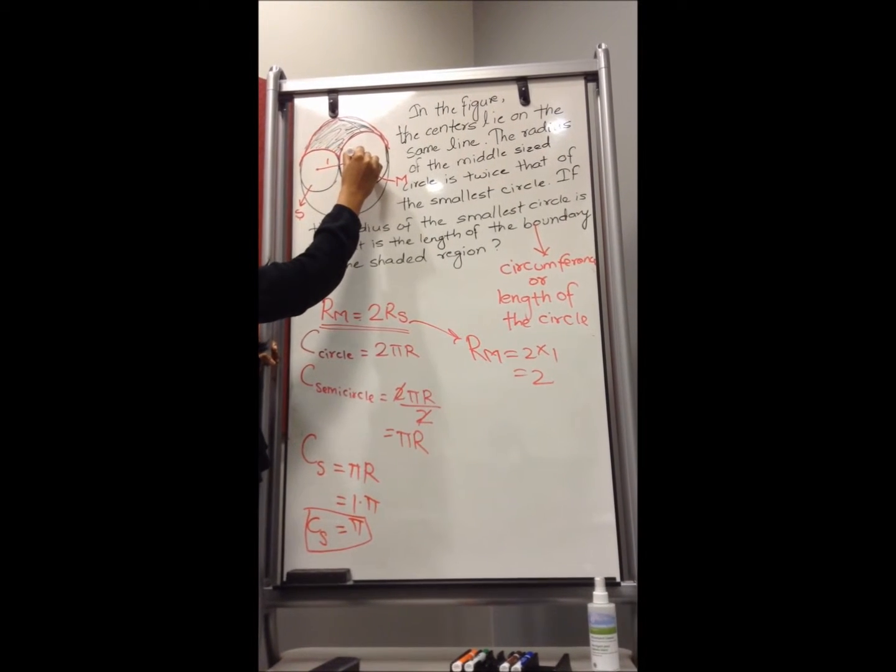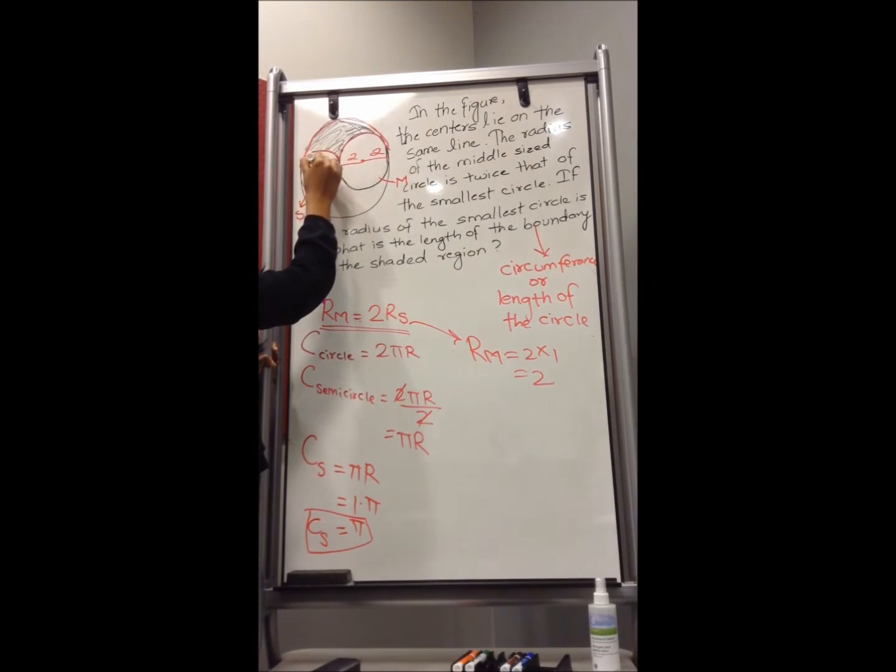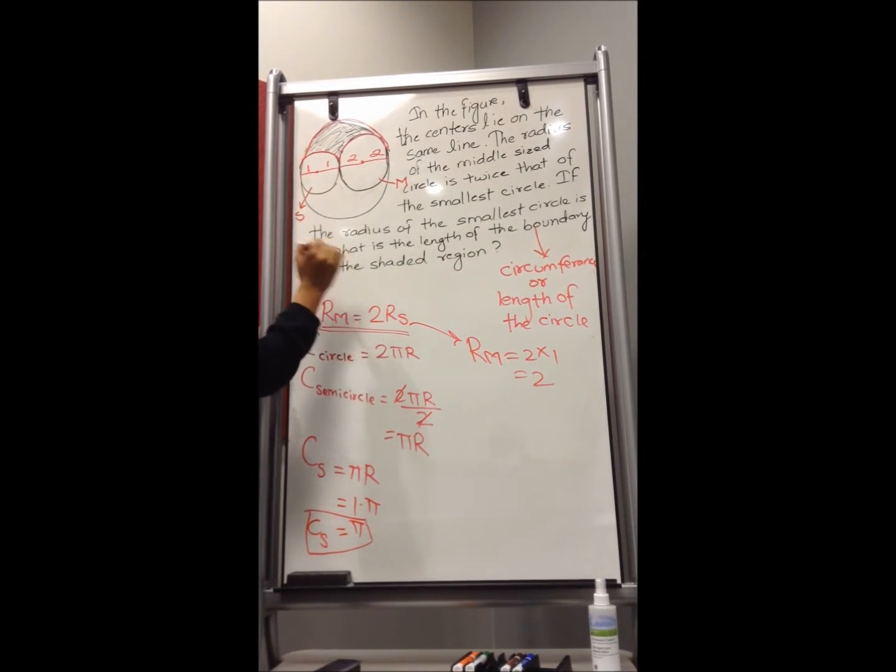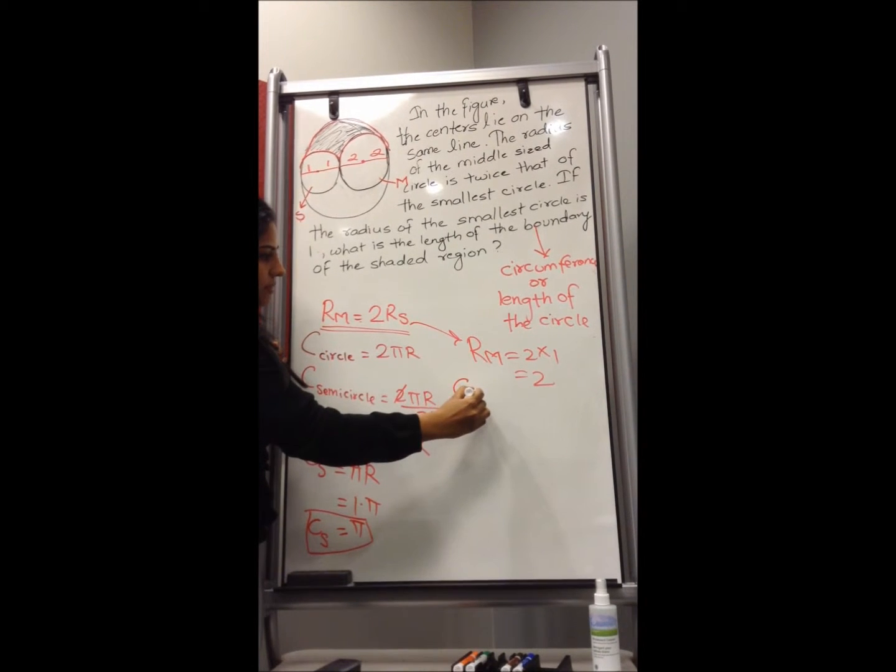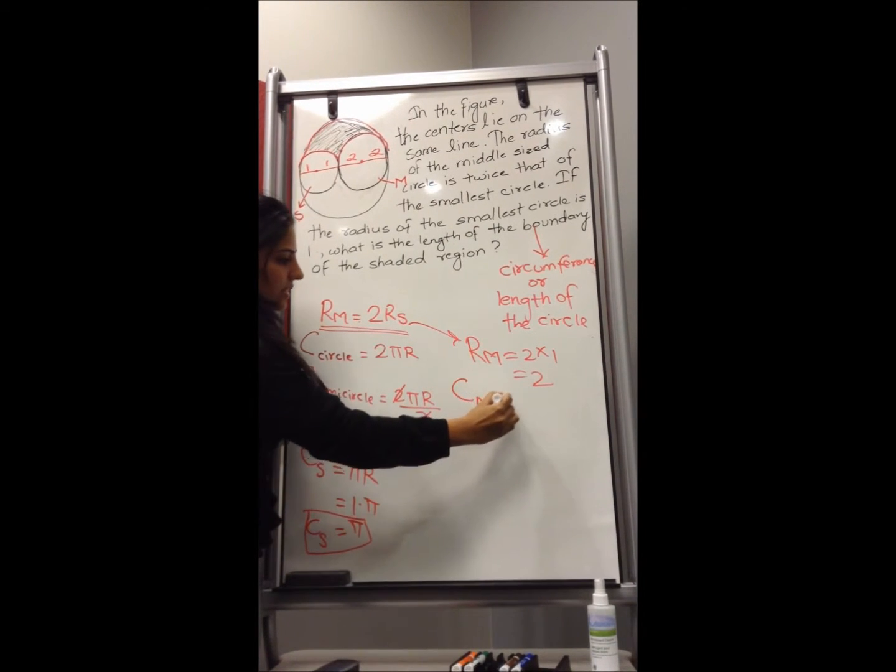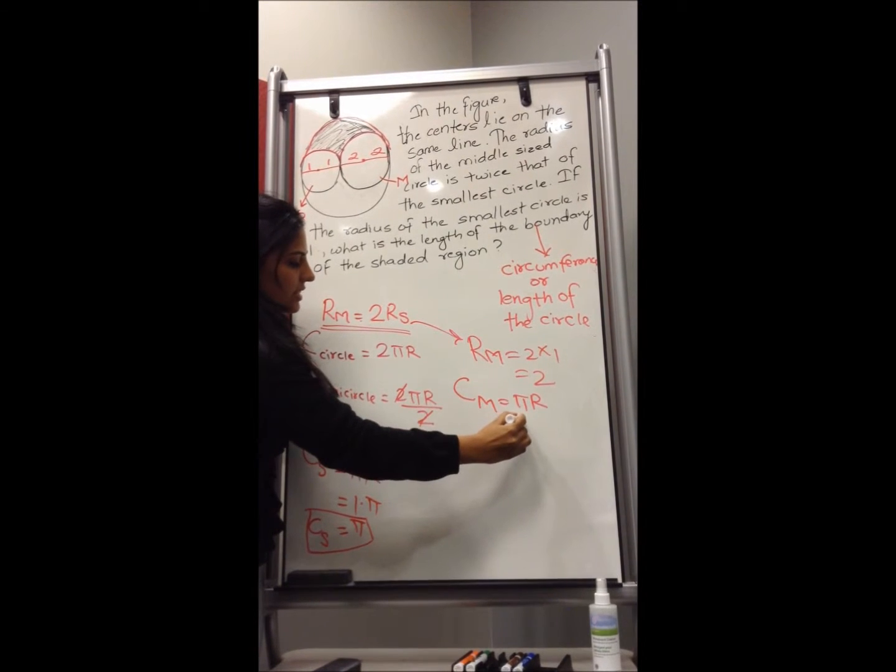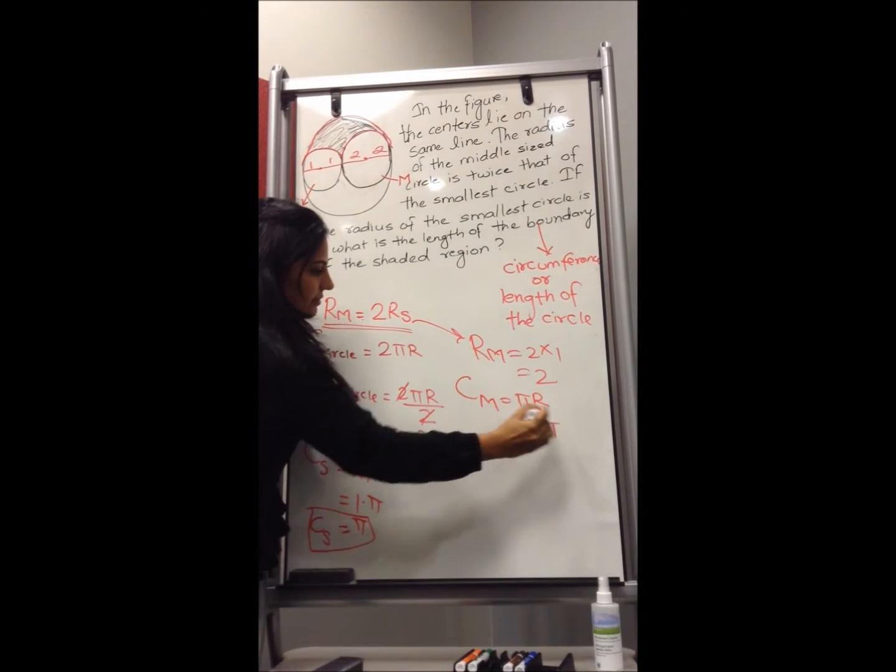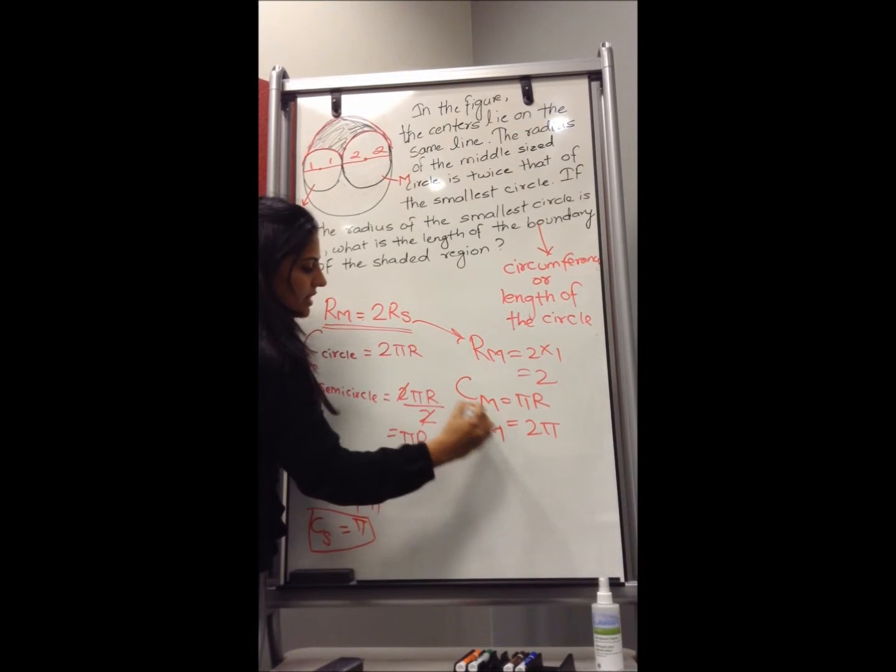Now if this is 2, the other side is also 2. And if this is 1, the other side is also 1. So now let's find the circumference of the medium size circle, which is again pi r, which is 2 pi, is the circumference of the medium size circle.